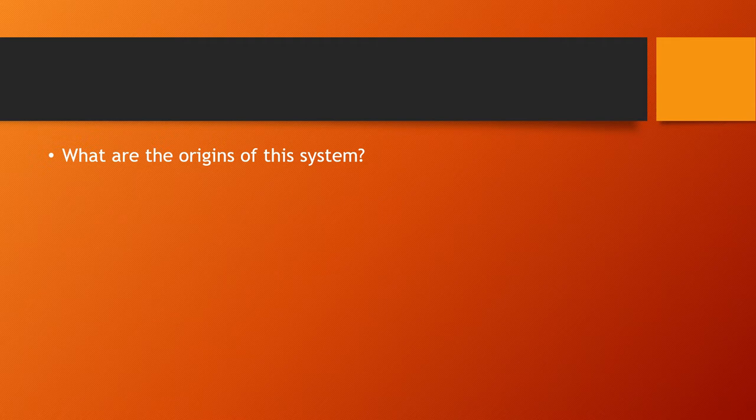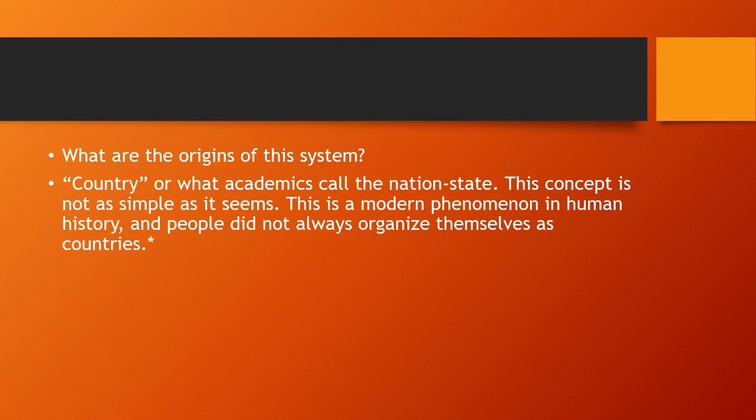So what are the origins of this system? To understand that, we need to understand the difference between a country and a nation. A country, or what academics call the nation-state, is not as simple as it seems. This is a modern phenomenon in human history, and people did not always organize themselves as a country. At different parts in history, people have identified exclusively with units as small as their village or their tribe.